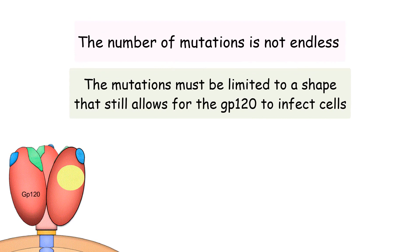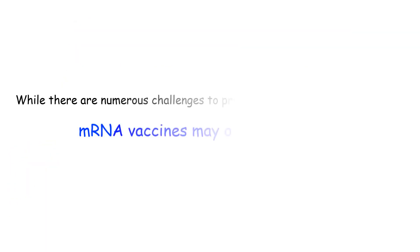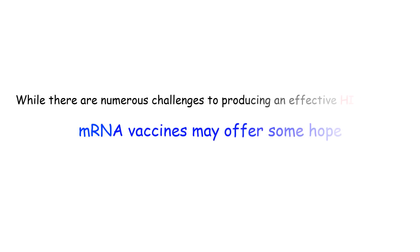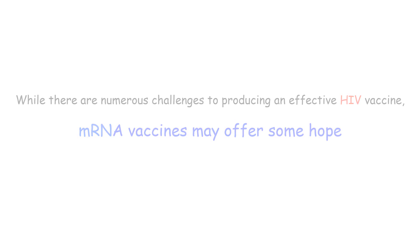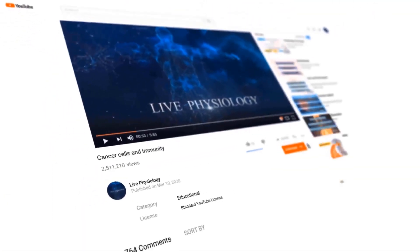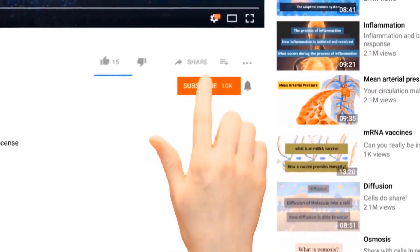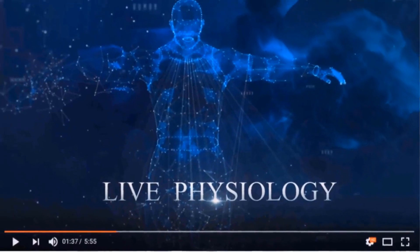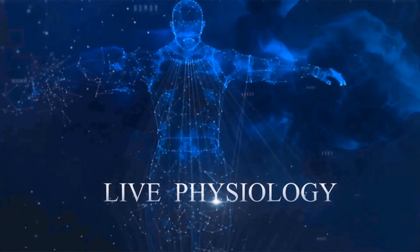Lastly, while the genes for the gp120 protein may mutate, the number of mutations is not endless — the mutations must be limited to a shape that still allows gp120 to infect cells. Thus, while there are numerous challenges to producing an effective HIV vaccine, mRNA vaccines may offer some hope. Thanks for watching, and remember to subscribe to our channel for the latest videos on the science of human physiology.